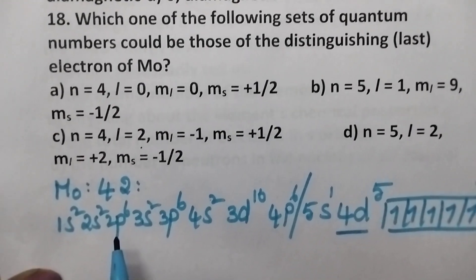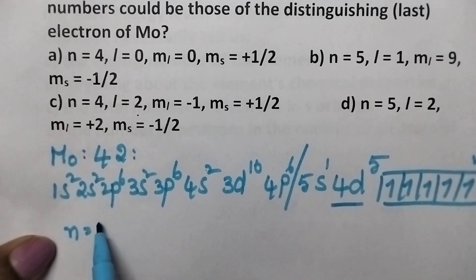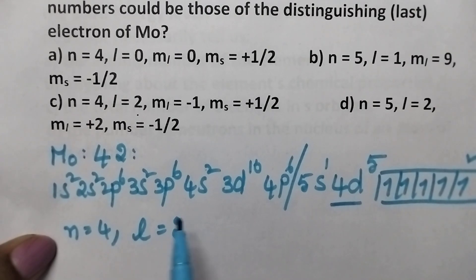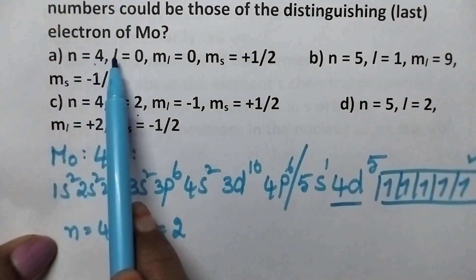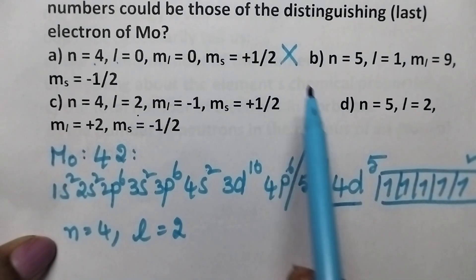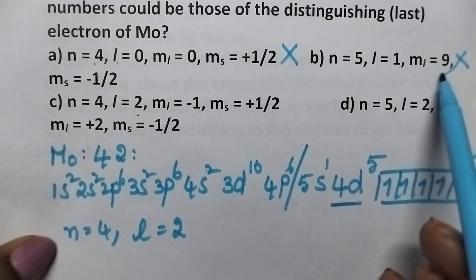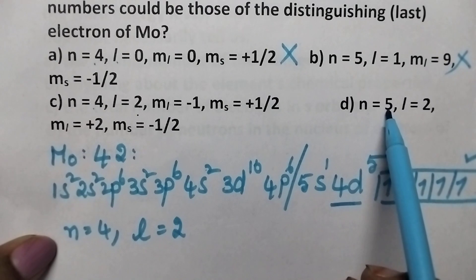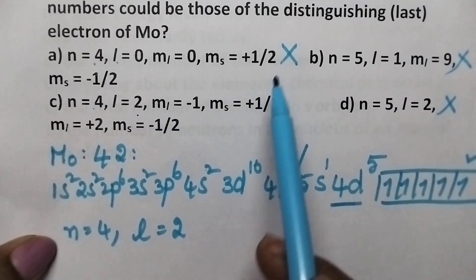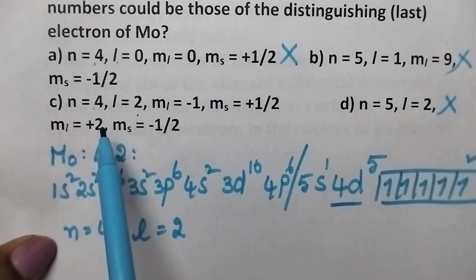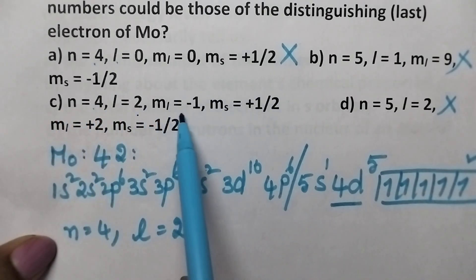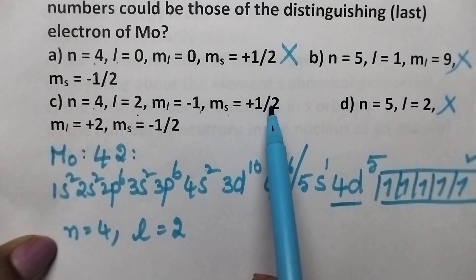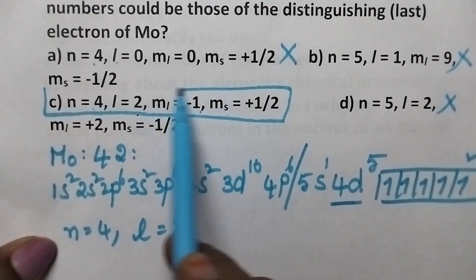4d⁵ means n=4; for the d orbital, l=2. Checking options: option A has n=4, l=0 — wrong. Option B has n=5 — wrong. Option D also has n=5 — wrong. Coming to option C: n=4, l=2, m=−1, m_s=+½. So option C is the right answer.